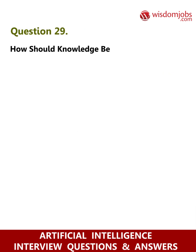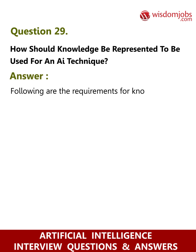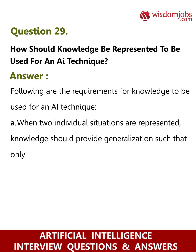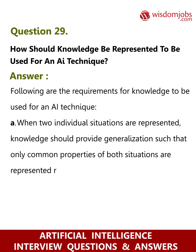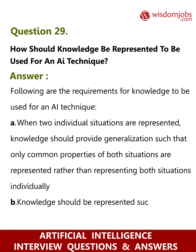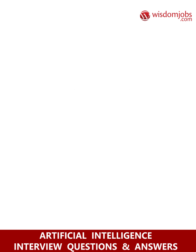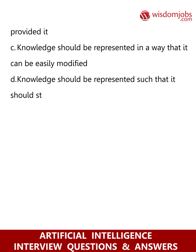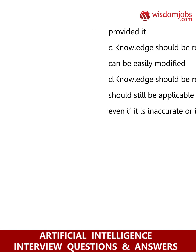Question 29: How should knowledge be represented to be used for an AI technique? Answer: Following are the requirements: A) When two individual situations are represented, knowledge should provide generalization such that only common properties of both situations are represented rather than representing both situations individually. B) Knowledge should be represented such that it should be understood by the people who have provided it. C) Knowledge should be represented in a way that it can be easily modified. D) Knowledge should be represented such that it should still be applicable to one or more situations even if it is inaccurate or incomplete.